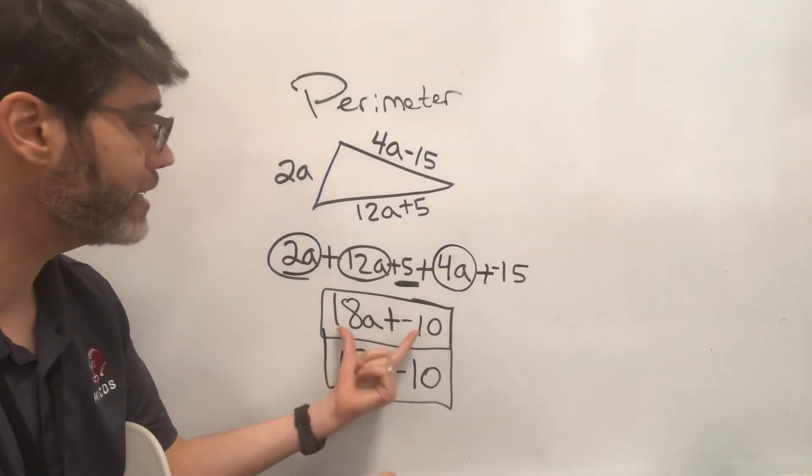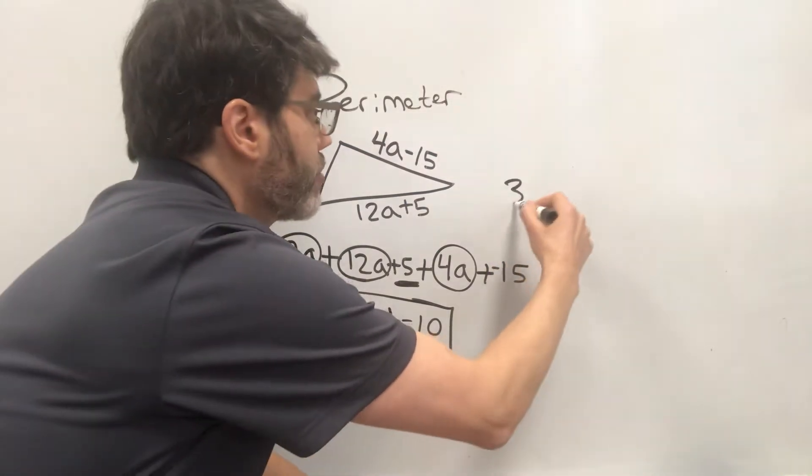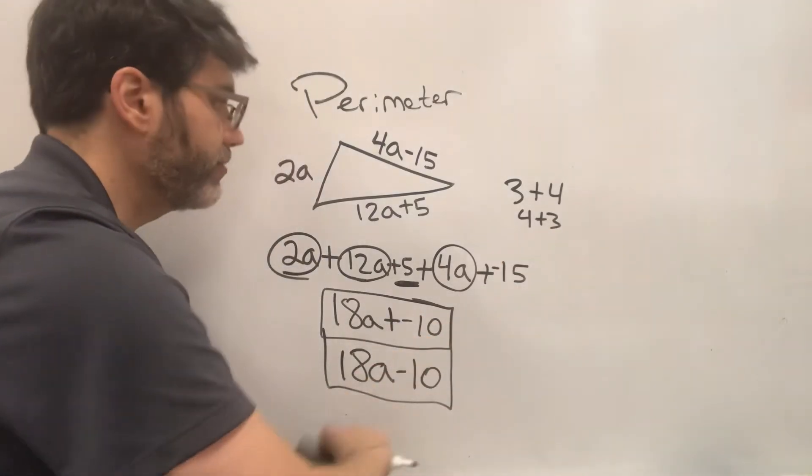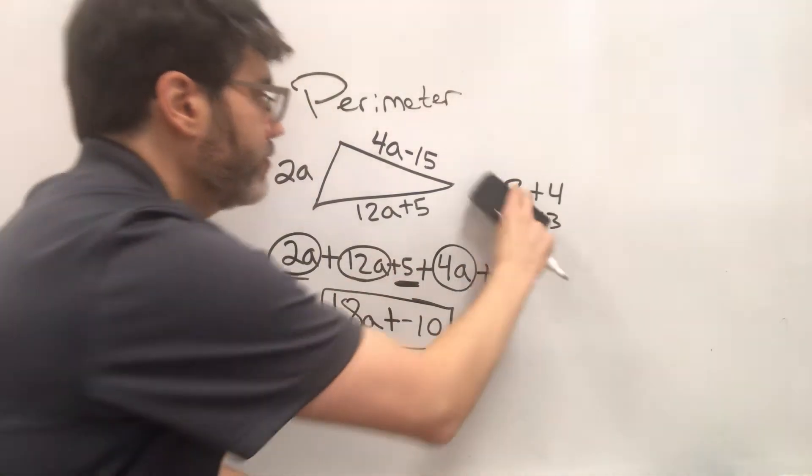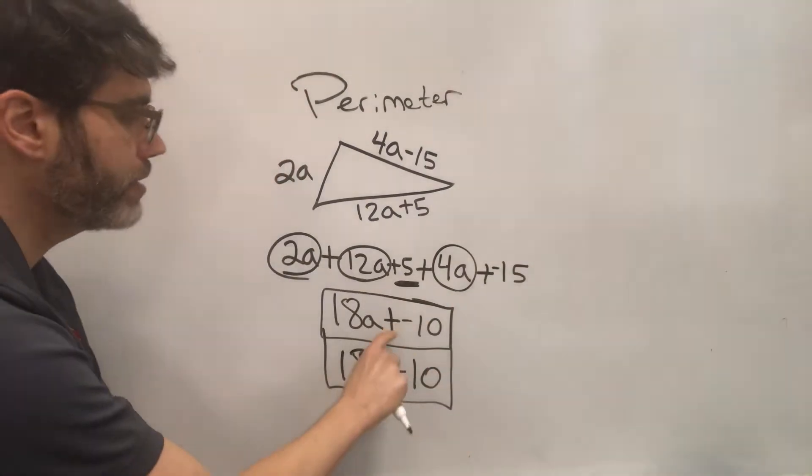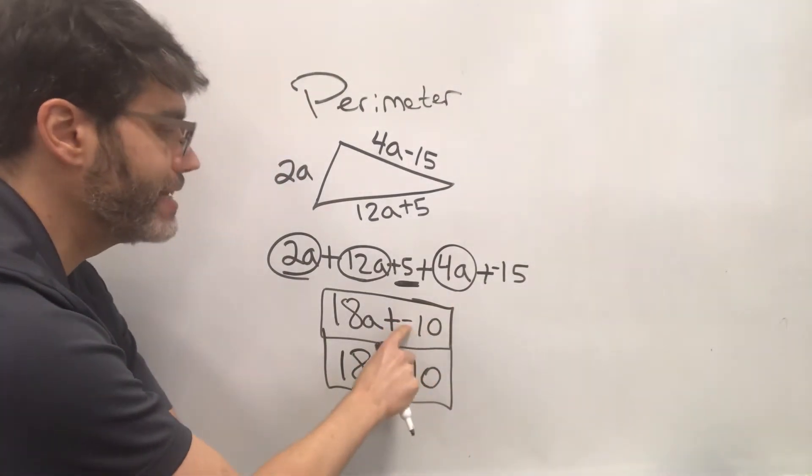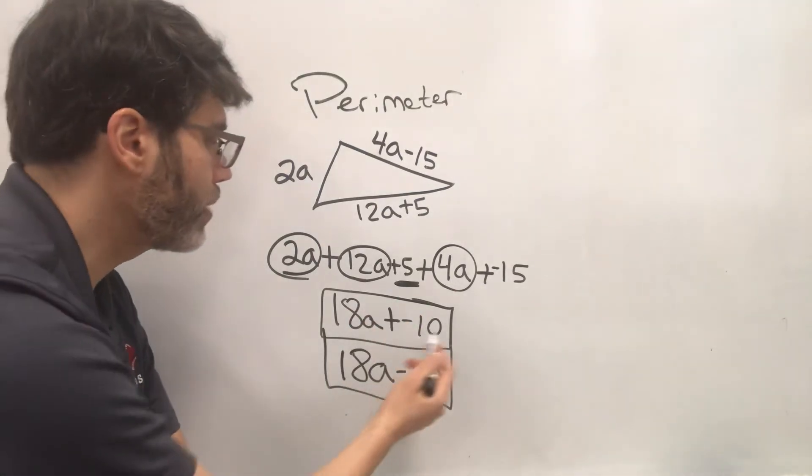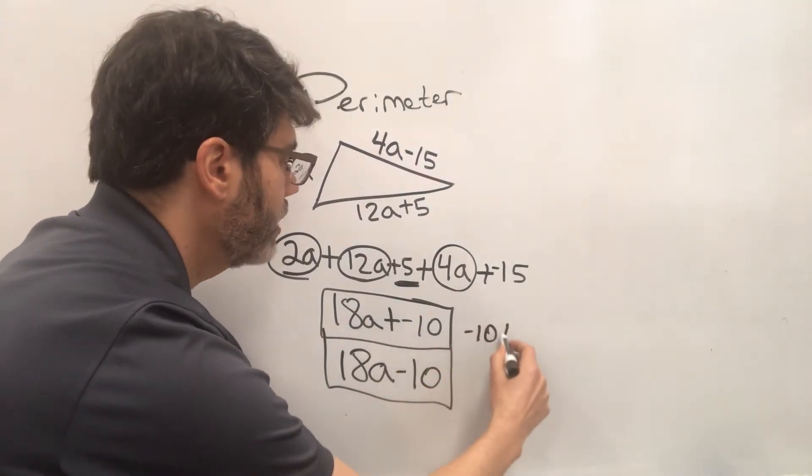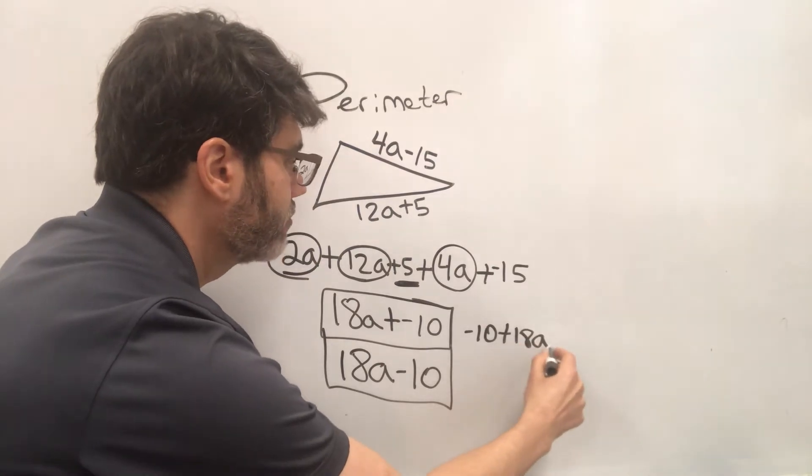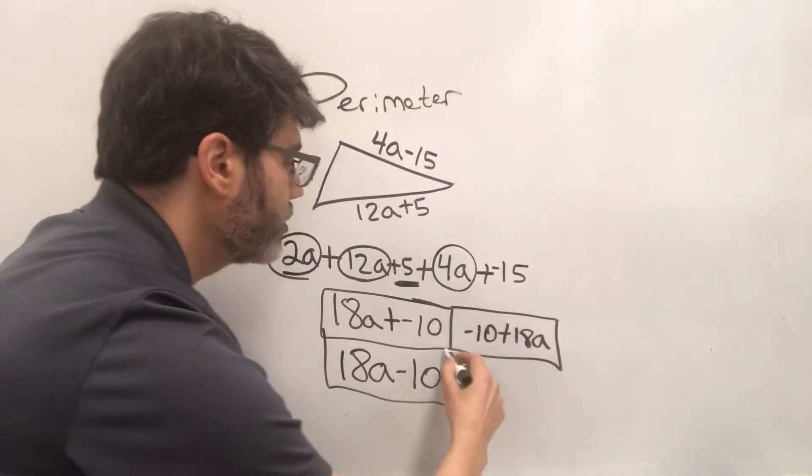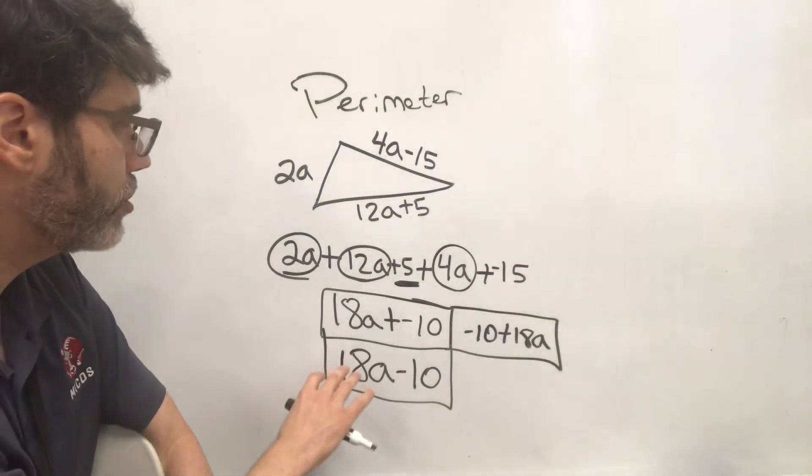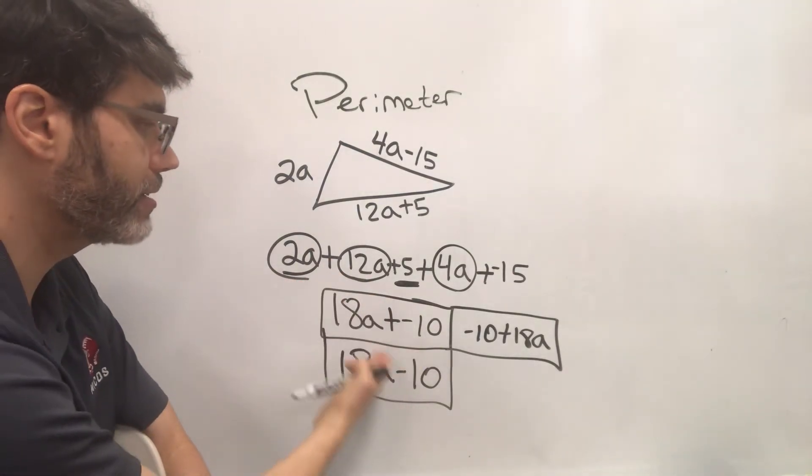Also, when you're adding two things together, just like if you're adding 3 plus 4, that's the same thing as 4 plus 3. So feel free to swap them around if you want. So just remember that since it's a plus negative 10, this negativeness of the 10 needs to travel with the 10. So if I were to rearrange this, it would be negative 10 plus 18a. And that's also a perfectly good way. So actually, there's three ways, and there may be more if I think about it of how to represent the perimeter.